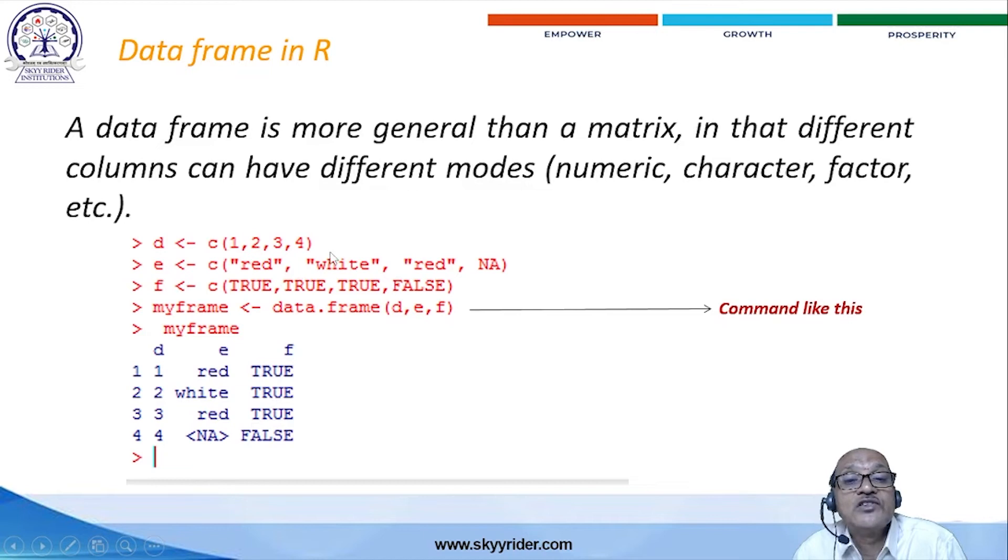And E is equal to some colors. You have to indicate variables like red, white and red. Not available data. And F is equal to 2, 2, 2, and 4. Like this, you have to create a simple data frame. The command line is very important. That is the command is data.frame with variable name. Whatever the variables you have to assign, that variable name must be indicated. You will get the answer like this.